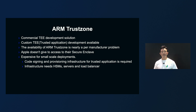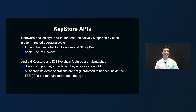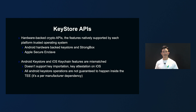While great on paper, in practice, these technologies are unfortunately very difficult to use by application developers even at LINE's scale. As an alternative to custom trusted application development, we can use the features natively supported by each platform's trusted operating system. Hardware key management features are exposed on Android via the KeyStore APIs and on iOS via the Keychain APIs. The problem is that Android KeyStore and iOS Keychain features are mismatched. Mainly, iOS doesn't support key importation, and key attestation was not supported before iOS 14. The other problem is that not all Android KeyStore operations are guaranteed to happen inside the TEE.